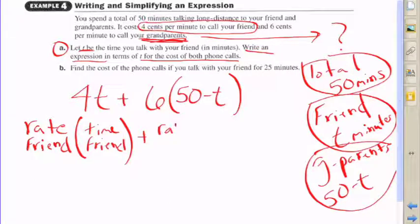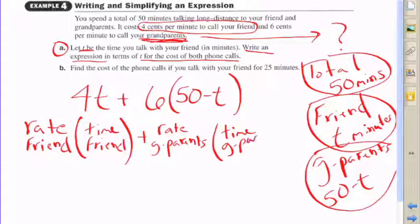So essentially, if you have this in words, it's the rate that you speak with your friends, which is four cents, multiplied by the time that you spend speaking to your friend, which is t, then you add that to the rate that it costs to talk to your grandparents per minute, which is six, multiplied by the time that you spend speaking with your grandparents, which is 50 minus t.